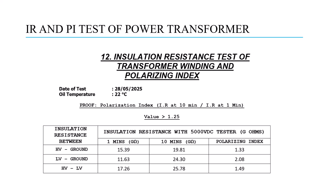The last slide shows actual practical results of the IR test. The test date and temperature are recorded, and the recommended PI value is greater than 1.25. On the left side we have three configurations: HV to ground, LV to ground, and HV to LV. Results at 1 minute and 10 minutes are shown in gigaohms. The polarization index values are 1.33, 2.08, and 1.49 respectively — all good and within recommended values. Thank you for watching.